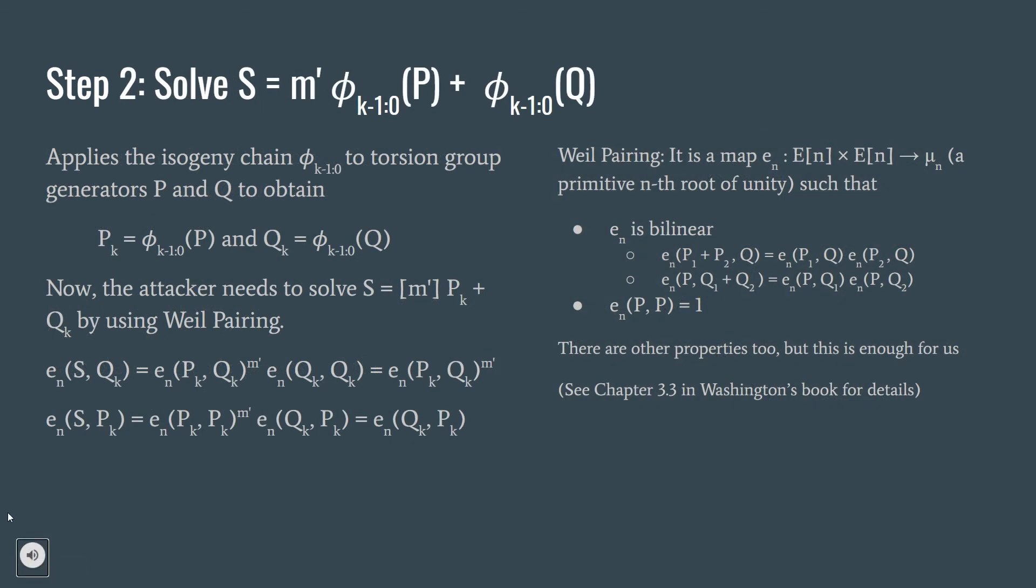Step 2, solving the equation for m dash. We have already found the isogeny chain from step 1. We apply this isogeny chain to starting generators P and Q, and find Pk and Qk. Now, our equation is simplified to S equals m dash times Pk plus Qk. And we will find m dash by using Weil pairing and solving the discrete log problem.